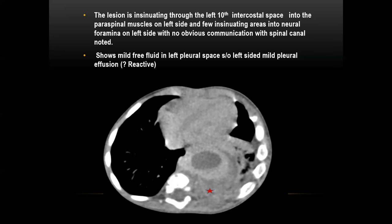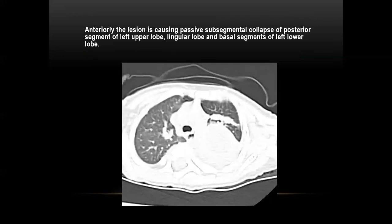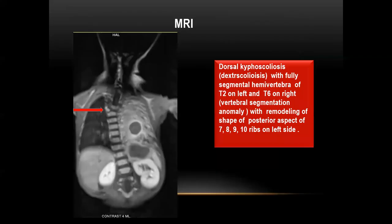However, there was no obvious connection with the spinal cord noted. There is minimal free fluid in the left pleural space, suggestive of pleural effusion. Anteriorly, the lesion is causing passive subsegmental collapse of the posterior segment of the left upper lobe, lingular lobe, and the basal segment of the left lower lobe.